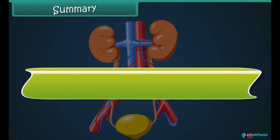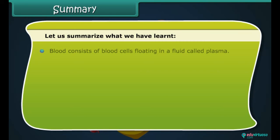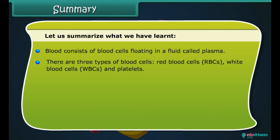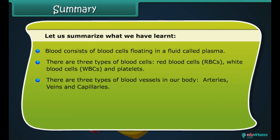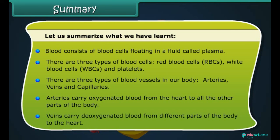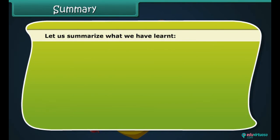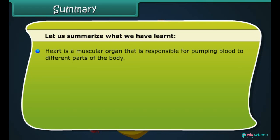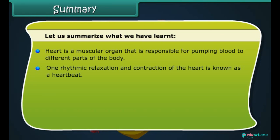Blood consists of blood cells floating in a fluid called plasma. There are three types of blood cells: red blood cells (RBCs), white blood cells (WBCs), and platelets. There are three types of blood vessels in our body: arteries, veins, and capillaries. Arteries carry oxygenated blood from the heart to all other parts of the body. Veins carry deoxygenated blood from different parts of the body to the heart. The heart is a muscular organ responsible for pumping blood to different parts of the body. One rhythmic relaxation and contraction of the heart is known as a heartbeat.